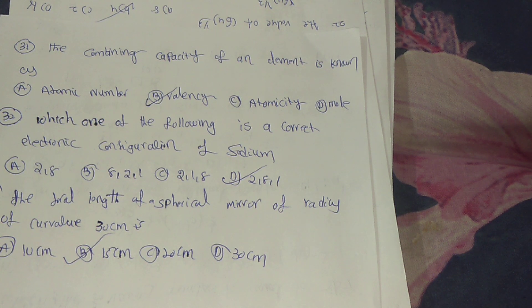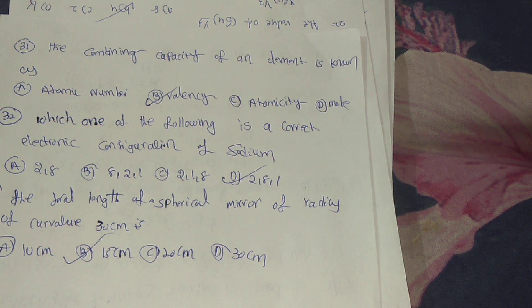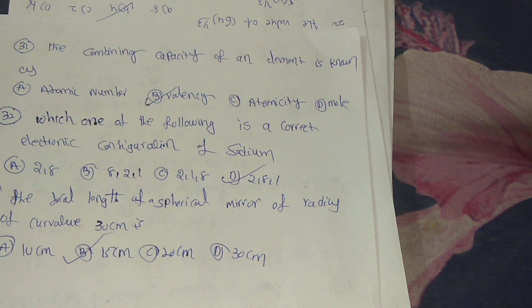Next, 33rd: the focal length of spherical mirror of radius of curvature 30 cm is? Answer is 15 cm.